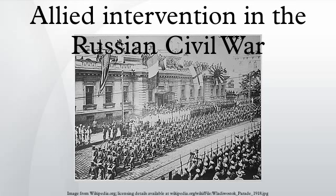Prologue to the Allied intervention. Revolution: In 1917, Russia was in a state of political strife, and public support for the war and the Tsar was dwindling. The country was on the brink of revolution.